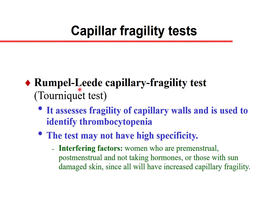The Rumpel-Leede capillary fragility test, also called the Tourniquet test, assesses the fragility of the capillary wall and is used to identify thrombocytopenia. It does not have high specificity and can be affected by factors such as premenstrual cycle, postmenopausal status without hormone replacement, or sun-damaged skin, all of which increase capillary fragility.